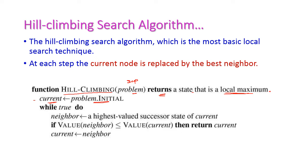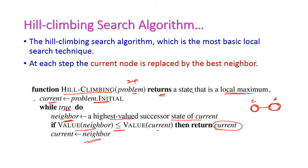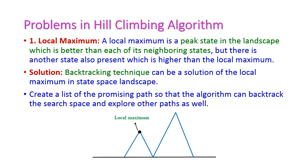The current node will change to the current state. While true, do: find the neighbor whose value is the highest-value successor state of current. This is the current state — initially the initial state — and it will find the neighbor whose value is greater than this current value. If the value of the neighbor is less than the current value, then return the current node. Otherwise, if the current value is smaller than the neighboring value, then this neighbor will become the current node.